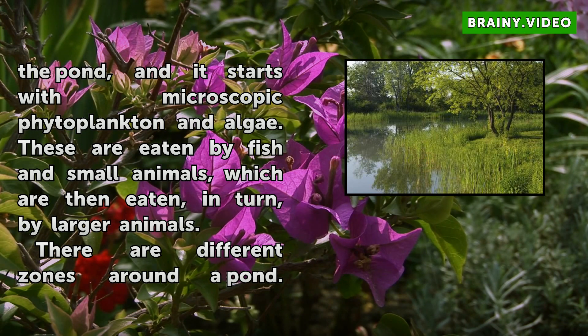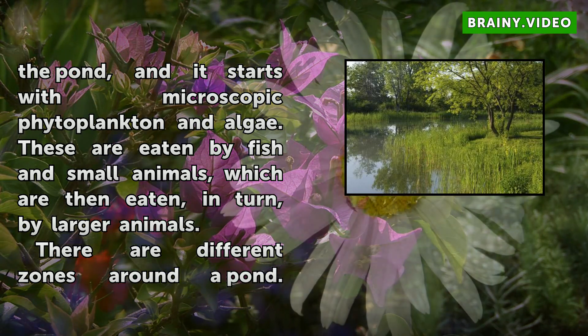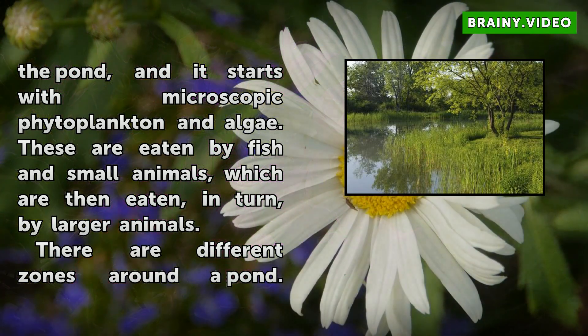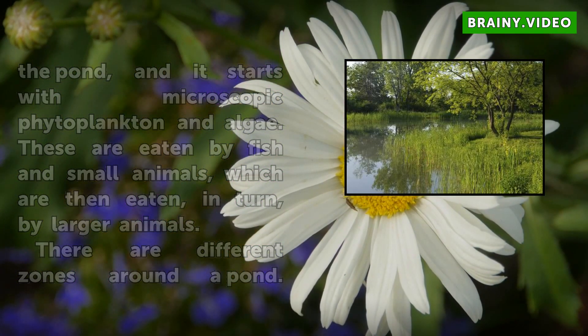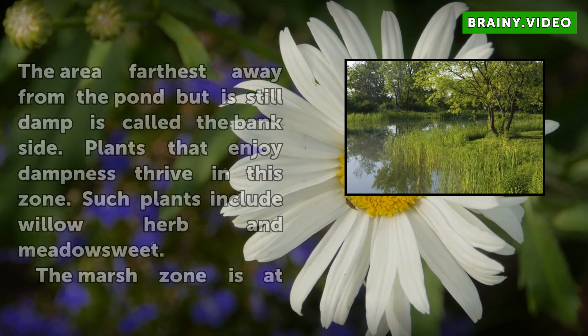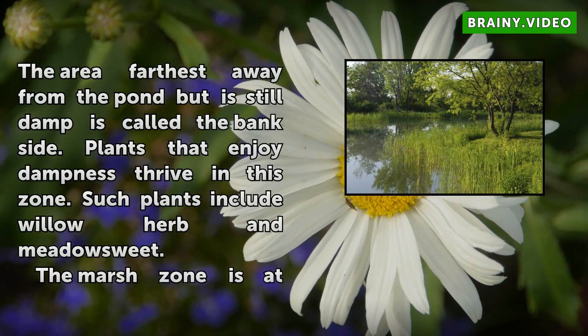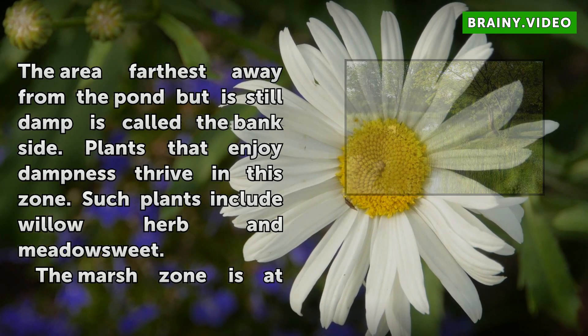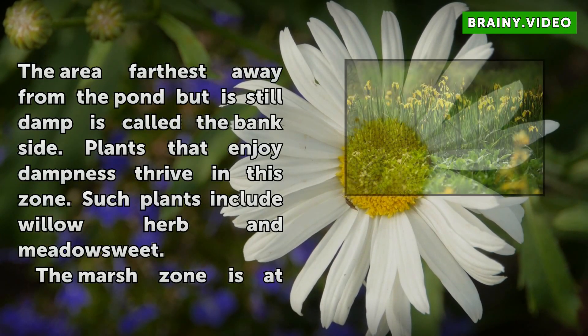There are different zones around a pond. The area farthest away from the pond but is still damp is called the bankside. Plants that enjoy dampness thrive in this zone. Such plants include willow herb and meadow sweet.